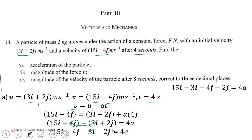We regroup the i terms and j terms. 15i - 3i gives 12i, and -4j - 2j gives -6j. So 12i - 6j = 4a. Dividing through by 4, we get acceleration = (12i/4) - (6j/4).